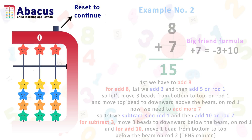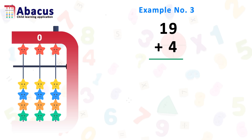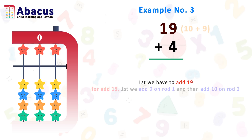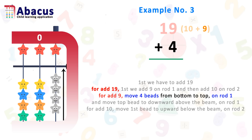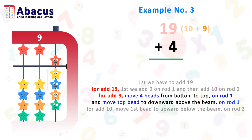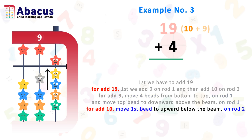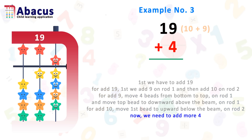Let's reset and go to the next example. Here is example number 3: 19 plus 4. First we have to add 19. For adding 19, first we add 9 on rod 1 and then add 10 on rod 2. For add 9, move 4 beads from bottom to top on rod 1, and move the top bead downward above the beam on rod 1. For 10, move the first bead upward below the beam on rod 2. Now we have to add more 4 beads, but we don't have any beads in the bottom on rod 1.